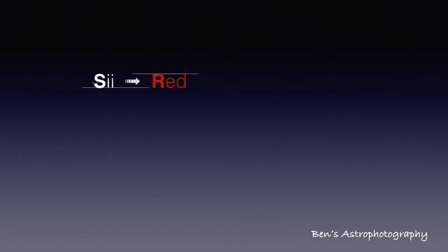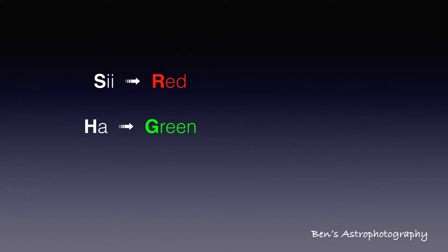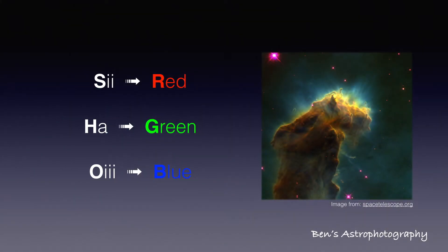As you probably know already, SHO means S2 matched to red, H-alpha matched to green, and O3 matched to blue. It is the most popular fake color palette ever since it was introduced by the Hubble Space Telescope. The biggest challenge in the SHO palette is star color — lots of stars will show magenta in this palette. That's probably because S2 red is more sensitive to stars, and the signal from H-alpha green is usually weakened to match the other channels.